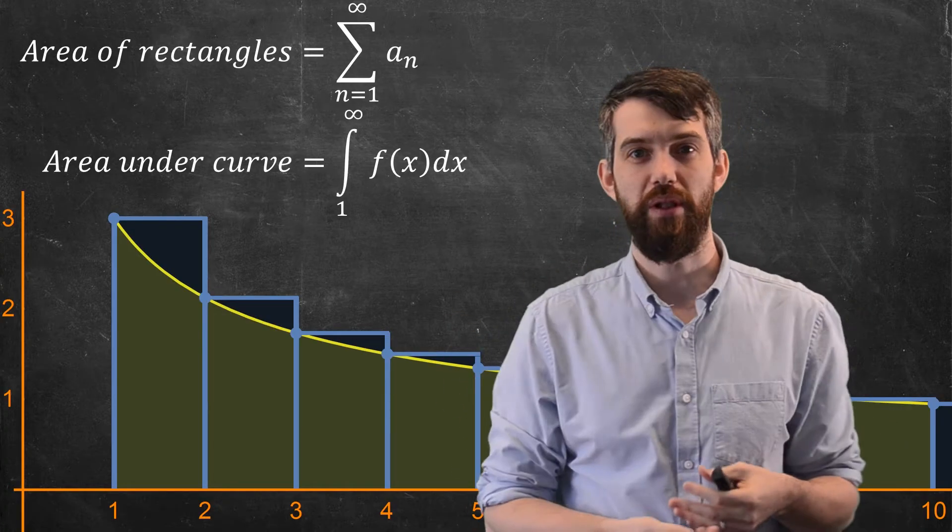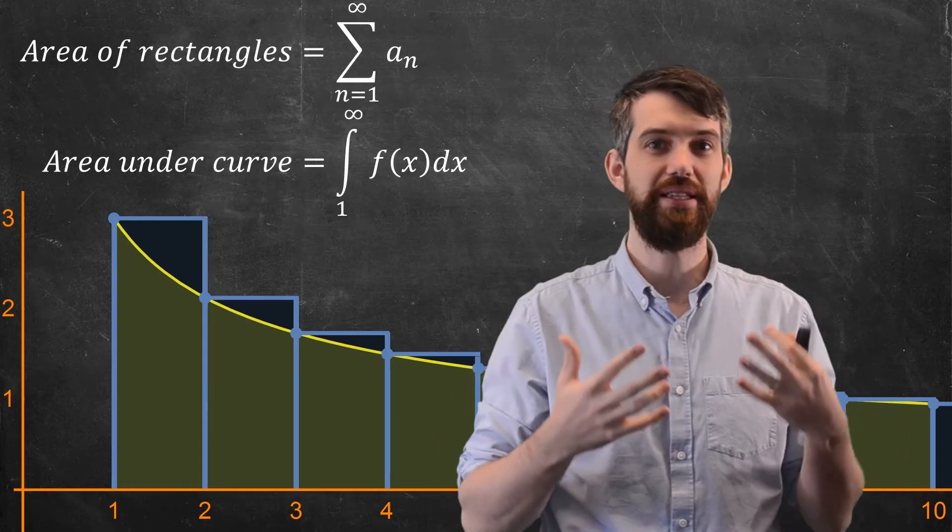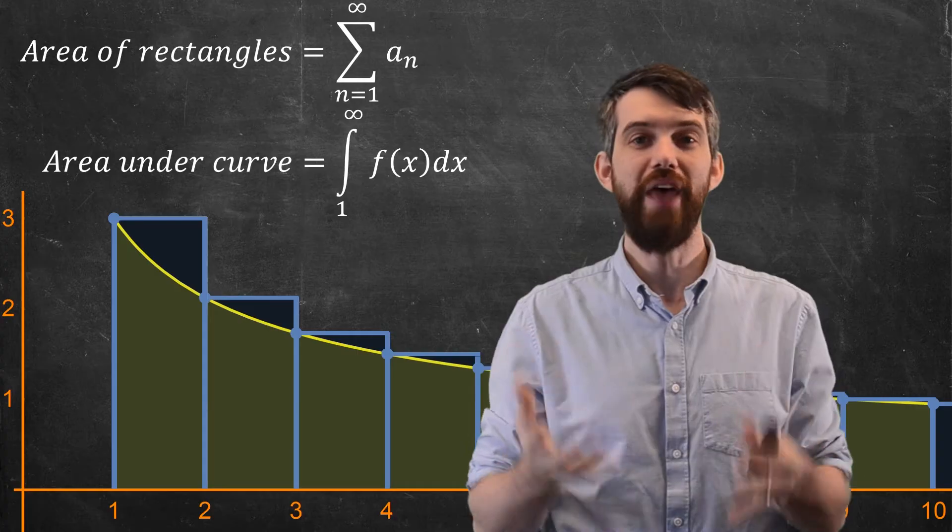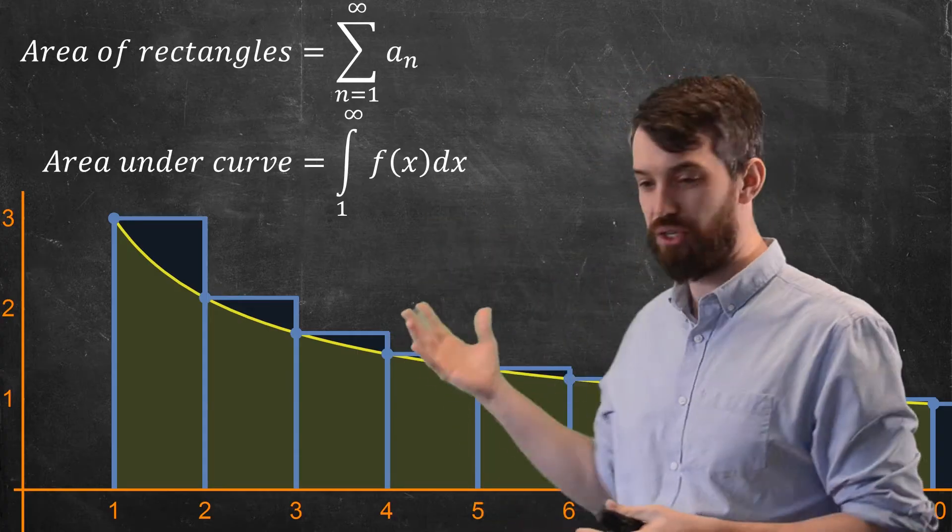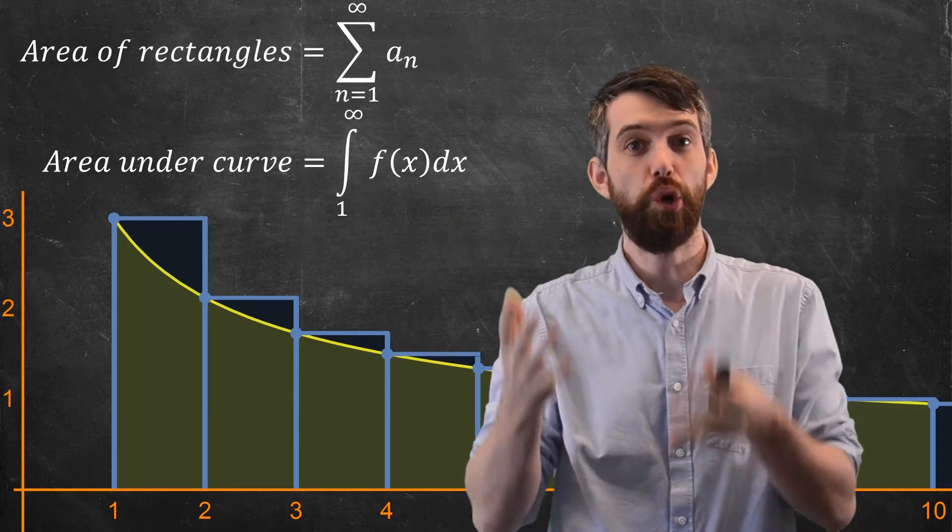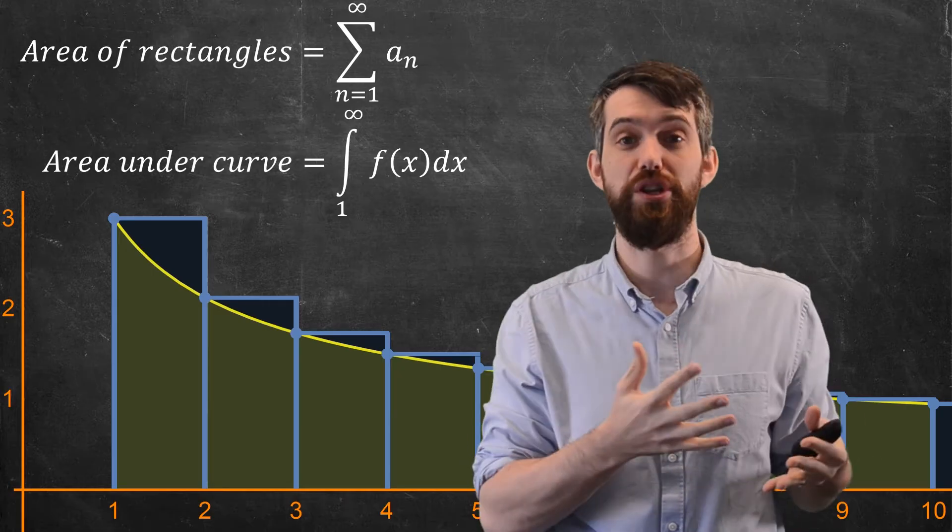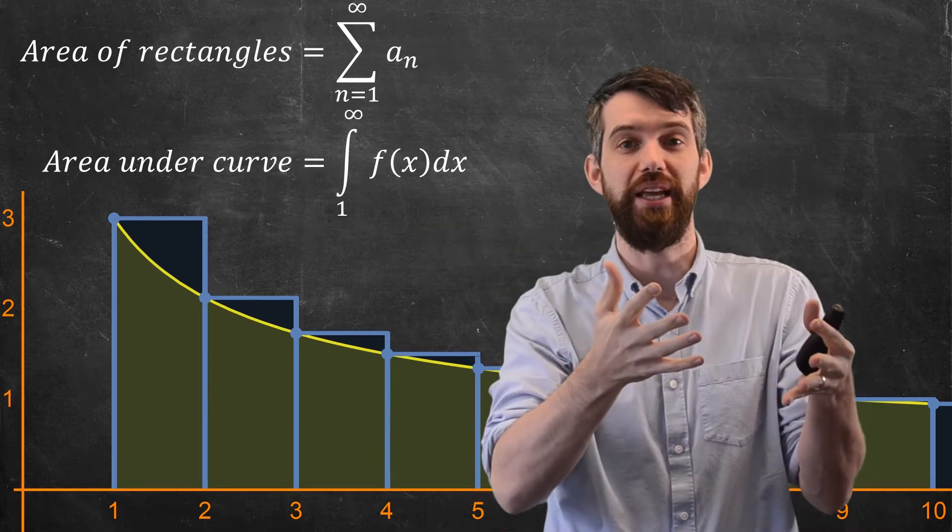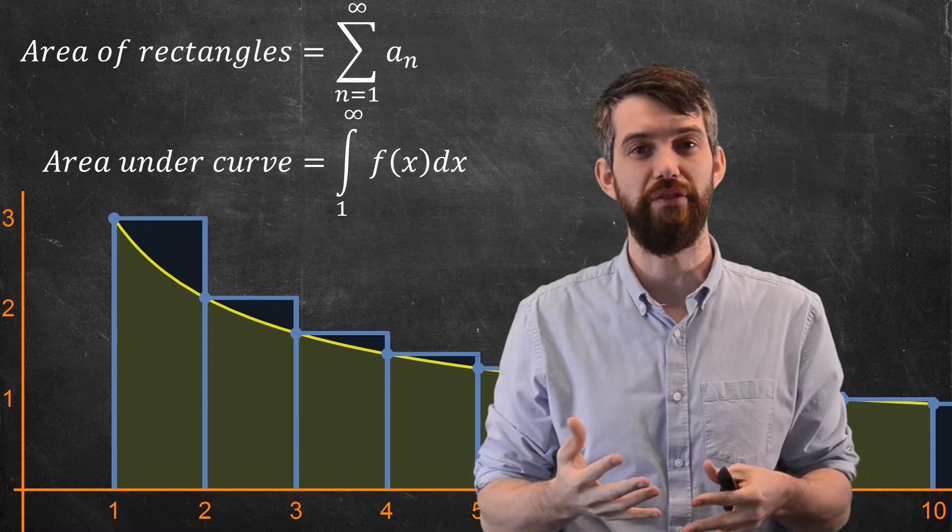Now, in this specific example, my function is continuous, my function is decreasing, and my function is positive. And in that scenario, there's a relationship between these two things. Notice how the rectangles are always bigger than the portion that comes from the area of the curve. There's little bits more sticking out in the area of the rectangles than the curve.